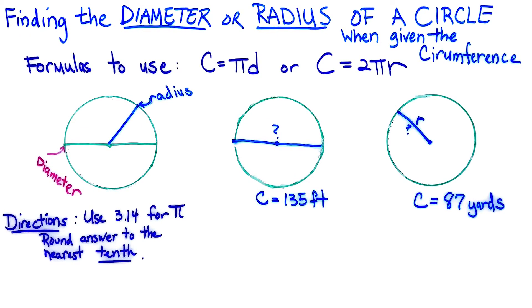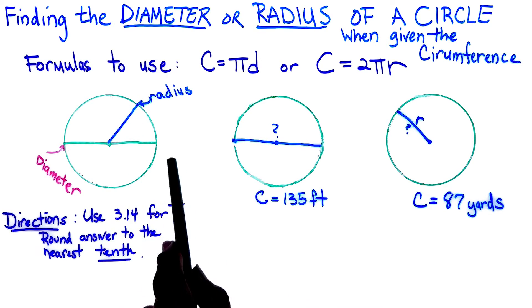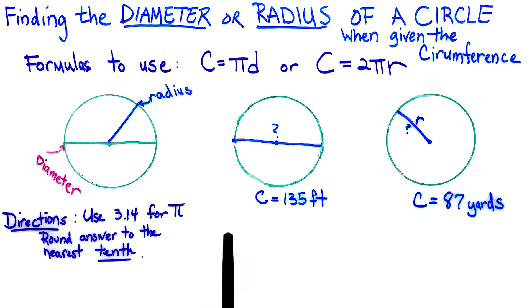For this lesson we will be finding the diameter or radius of a circle when the circumference is given. Remember, the circumference is the distance around the circle, so our units will be in regular units. The directions tell us to use 3.14 for pi, which is rounded since pi goes on forever, and we're going to round our final answer to the nearest tenth.